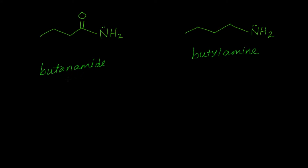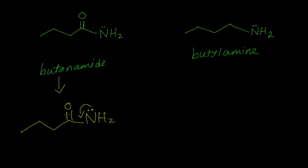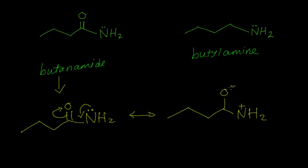Our first comparison here is between butanamide and butylamine. Butanamide can have two resonating structures: the lone pair of electrons on nitrogen can be pushed toward the carbonyl, and this double bond can move to the oxygen, giving another resonating structure. So we can notice that this lone pair of electrons is not always available — it's participating in resonance.